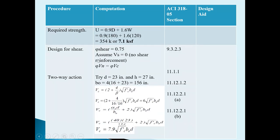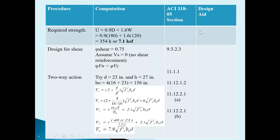ACI clause 9.2 gives these load combinations. Among all four load combinations the maximum strength required controls the design. For the shear design, the phi factor is 0.75. We are assuming no shear reinforcement requirement, so we will just adjust the thickness of the foundation.